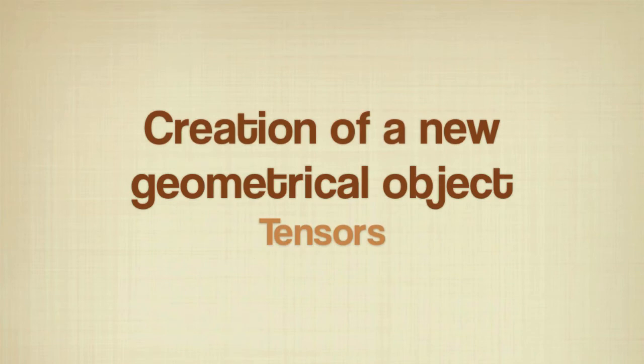At the end of the 19th century, after the analysis of certain forces leading to a nine-number vector characterizing forces or voltage, mathematicians had to invent a new geometric object. Therefore, tensors were created.